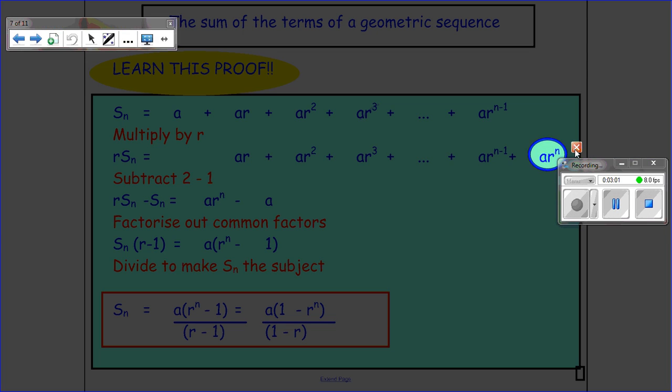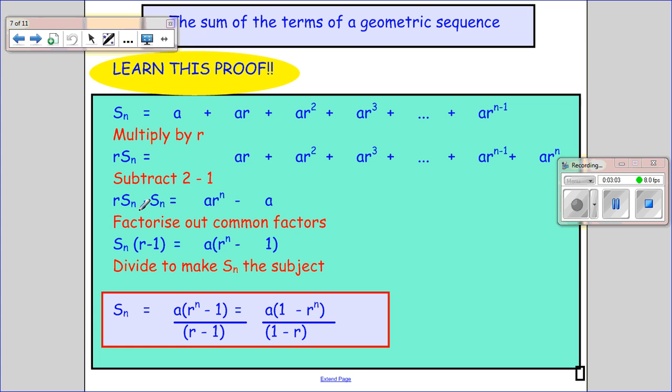So then I get that r times sn minus sn equals a rn minus a. And so then I just factorize out this sn, so I get r minus 1 there, and then I get a to the rn minus 1 because I factorize out the a, and then I divide by the r minus 1, and then I get what I want here.